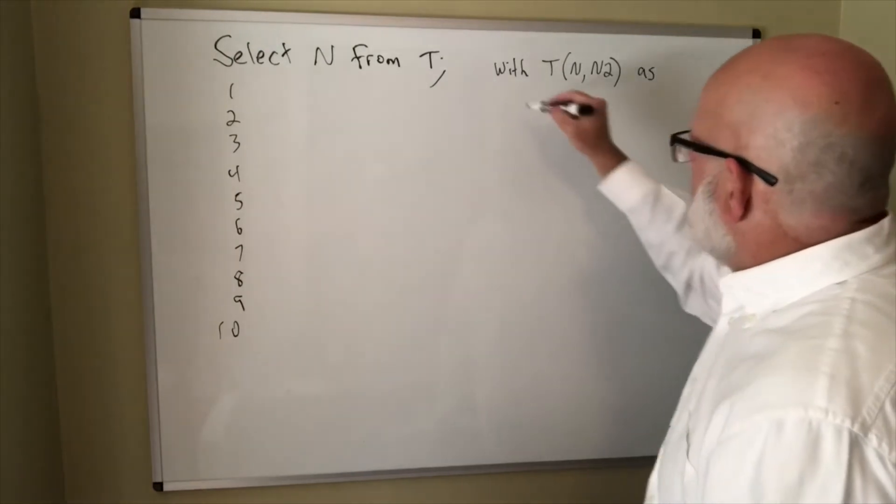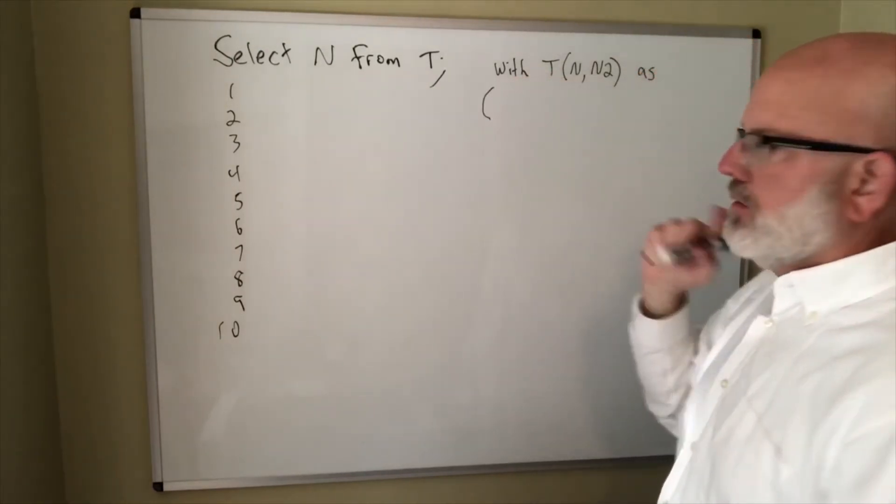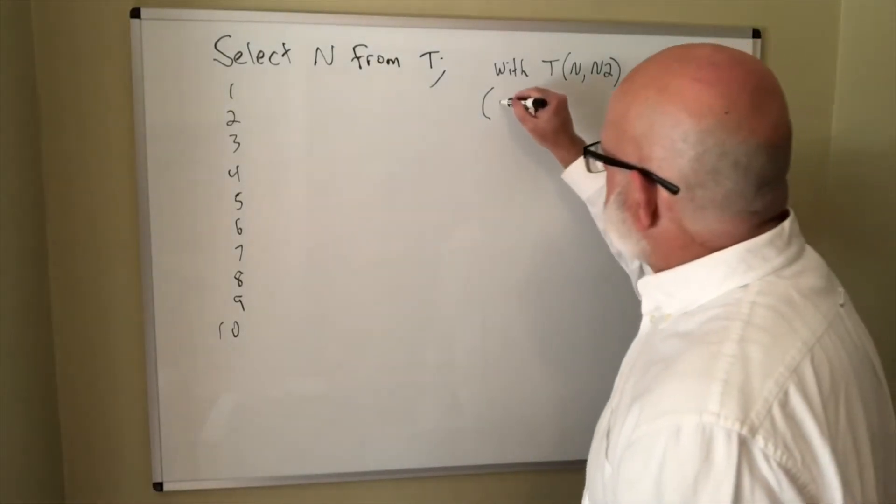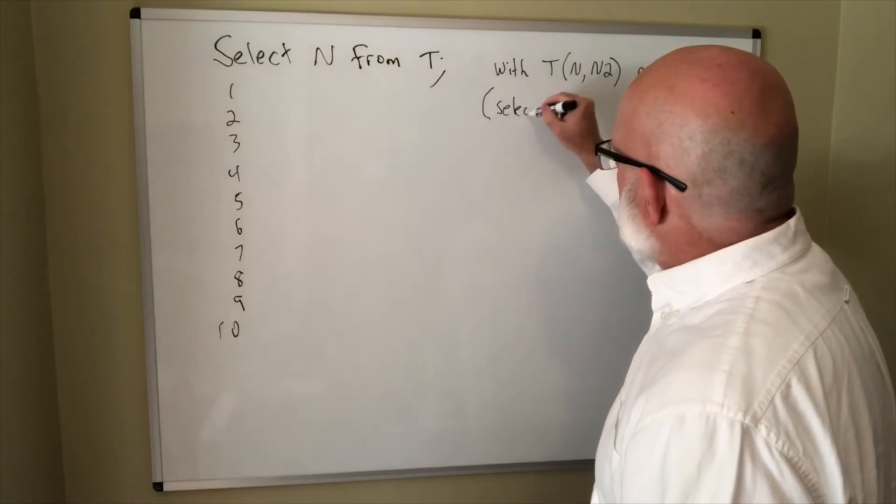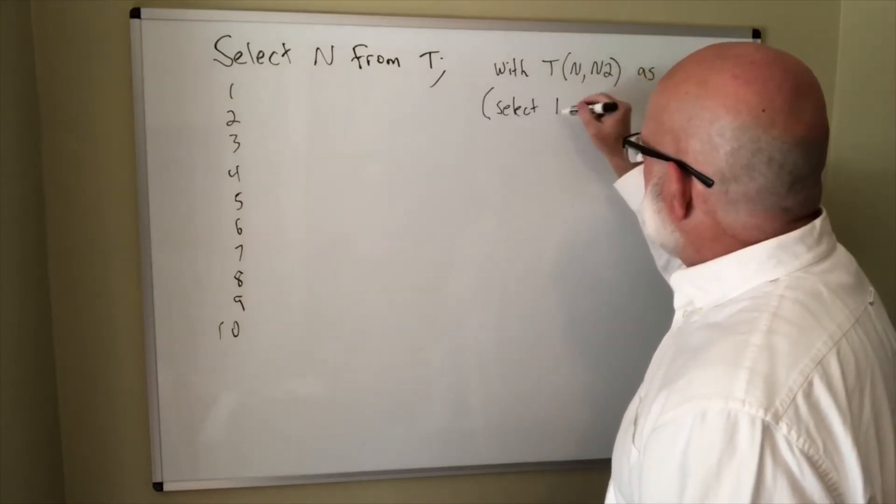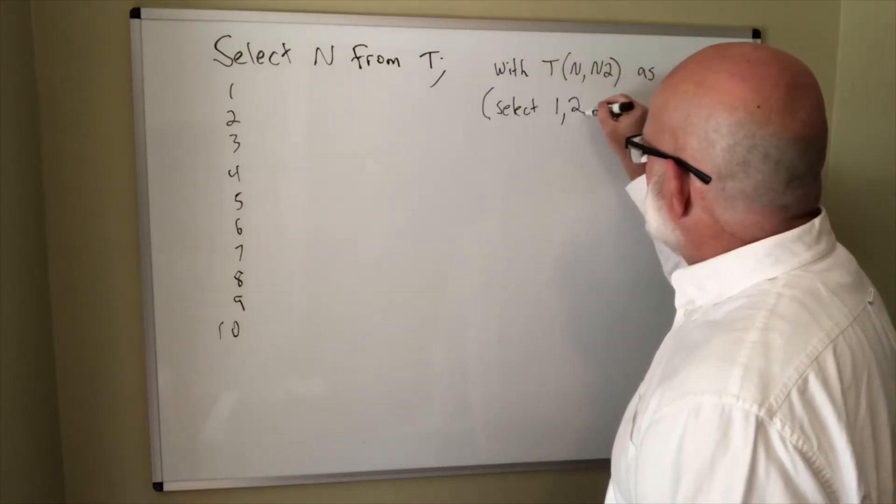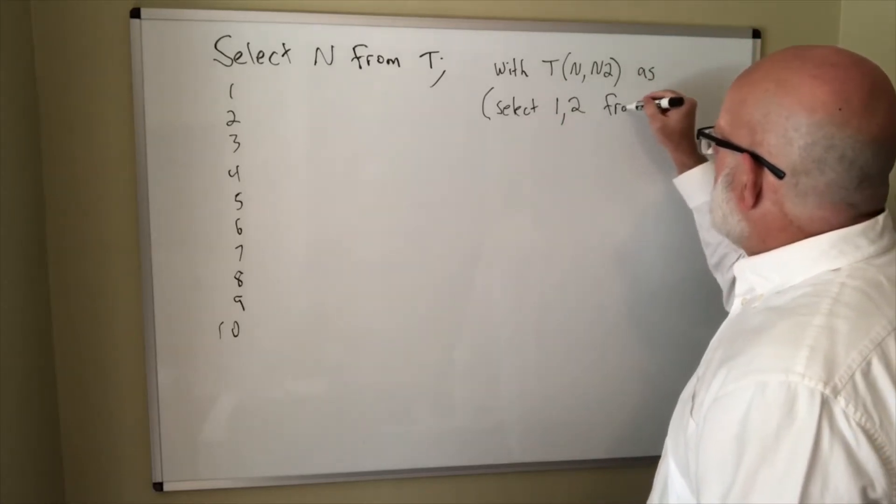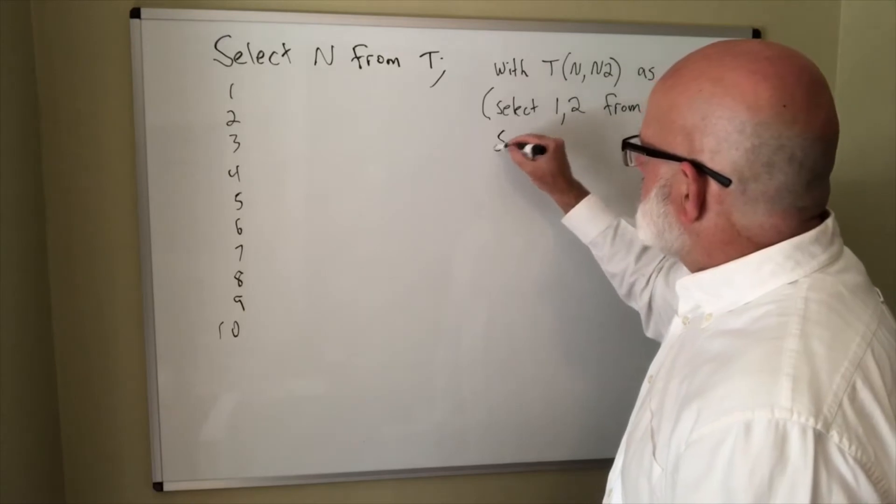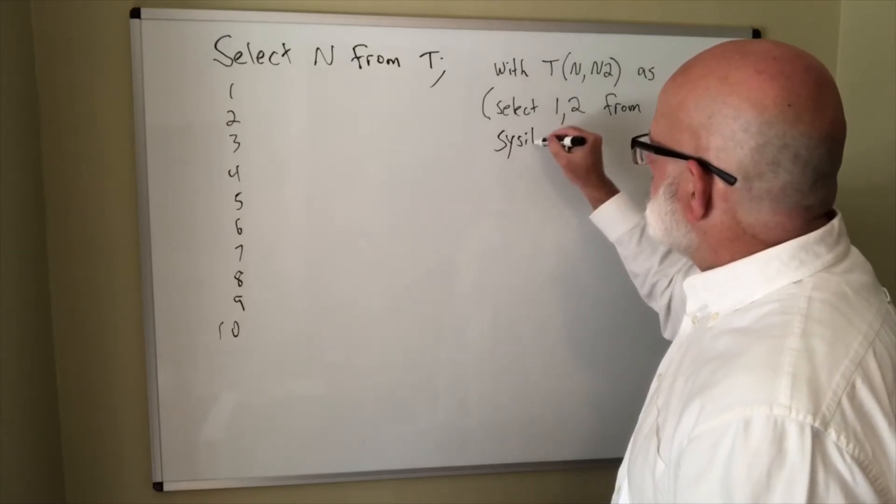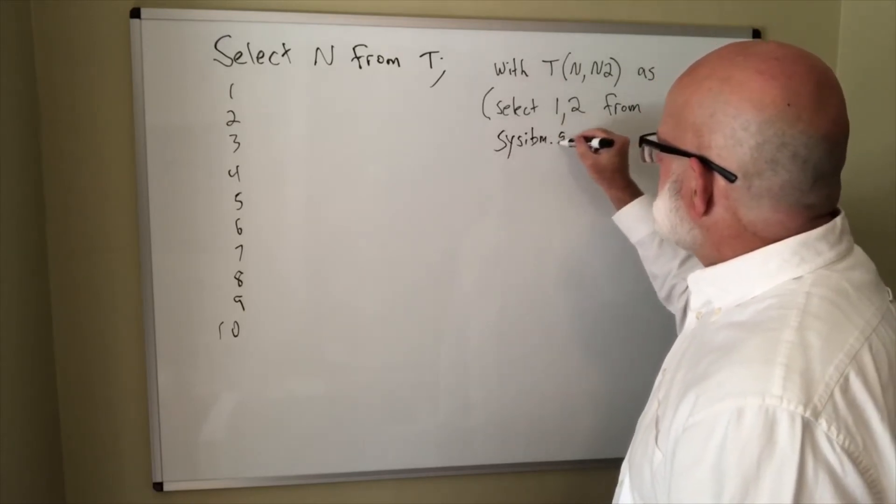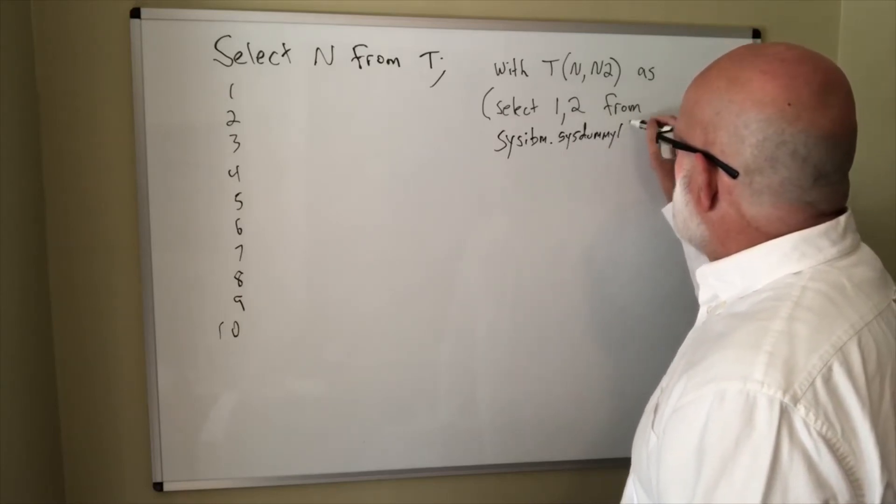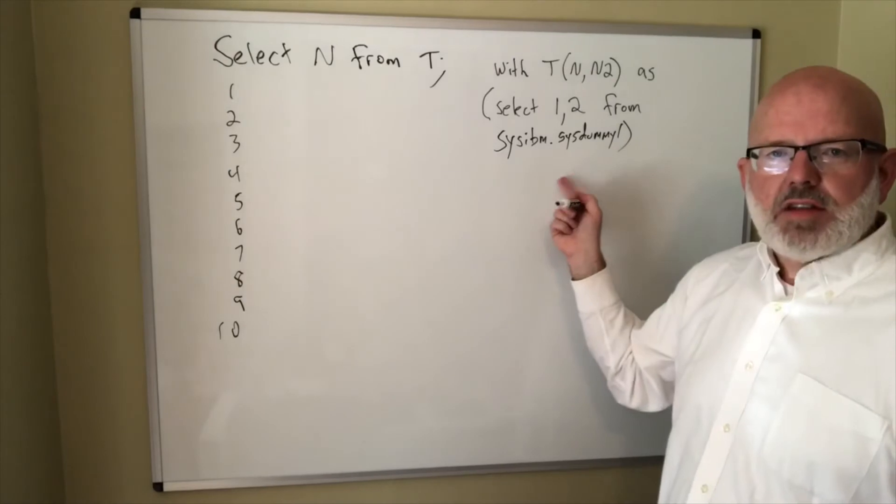So we start with a with statement and we're going to name our table t and our columns n and n2, current value and the next value. The first thing you do in a recursive table is you define the first row, the trivial case. The trivial case is the case in which the first number is a 1 and the second number is a 2. So we're going to select 1, 2 from, and db2 has provided this useful table called sysibm.sysdummy1, which is always guaranteed to have exactly one row in it.